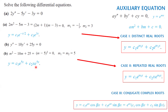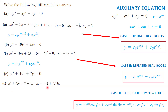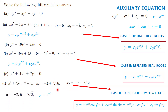Case 3 example: For y'' + 4y' + 7y = 0, the auxiliary equation is m² + 4m + 7 = 0. The roots are m₁ = −2 + √3 i and m₂ = −2 − √3 i, so α = −2 and β = √3. Plugging into the formula, the general solution is y = e^(−2x)[c₁cos(√3 x) + c₂sin(√3 x)].